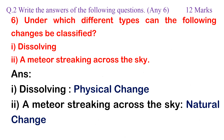Question 6: Under which different types can the following changes be classified? 1. Dissolving, 2. A meteor streaking across the sky. Answer: 1. Dissolving — Physical change. 2. A meteor streaking across the sky — Natural change.